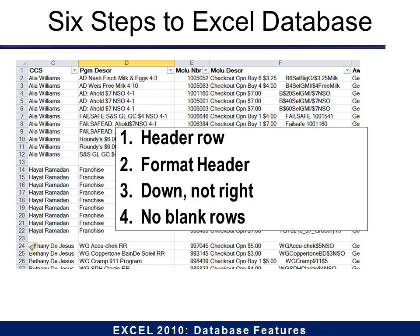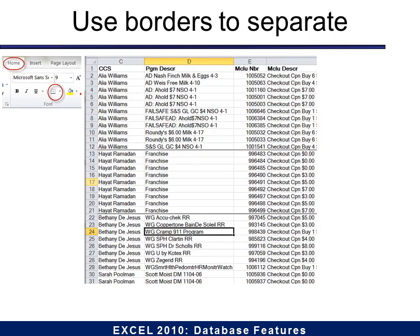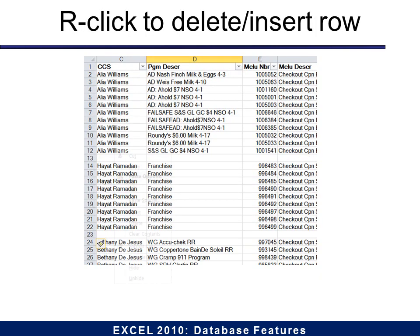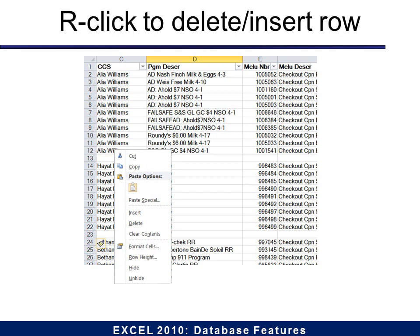Step number four is no blank rows. A lot of times we want a blank row in there to separate data. But Excel sees that as the end of your database, so you don't want blank rows. Instead, I would recommend that you use borders. Under Home, you find the option for borders, and then you want to delete those blank rows.